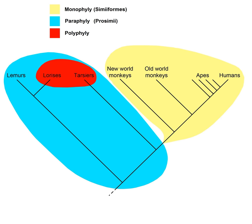In cladistics, a monophyletic group, or clade, is a group of organisms that consists of all the descendants of a common ancestor. Monophyletic groups are typically characterized by shared-derived characteristics, synapomorphies, which distinguish organisms in the clade from other organisms.